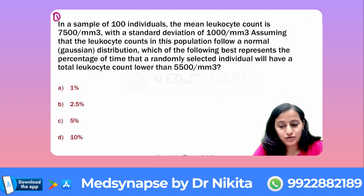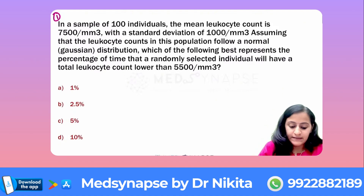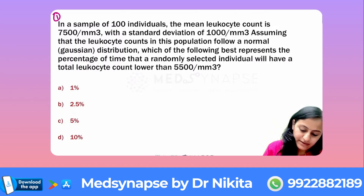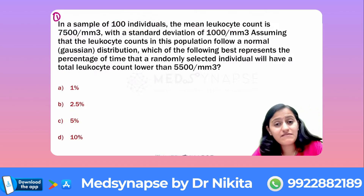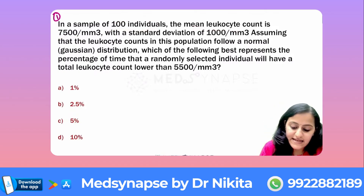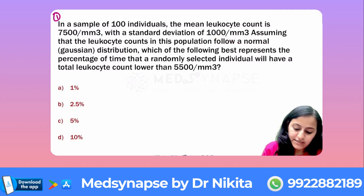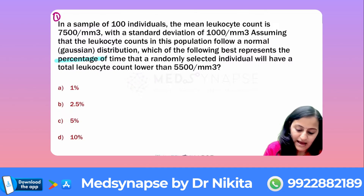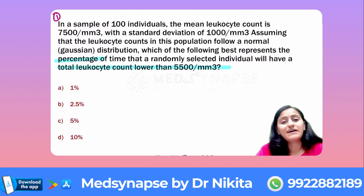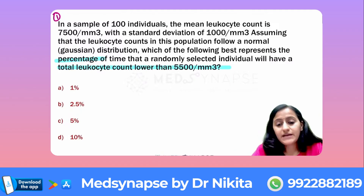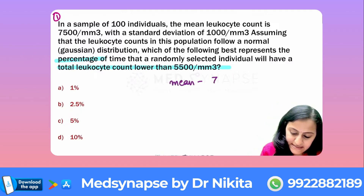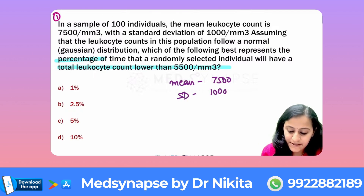This is a very frequently asked question. A sample of 100 individuals is given: mean WBC count is 7500, standard deviation is 1000. It is a normal distribution. What is the percentage that a randomly selected individual will have a TLC less than 5500?